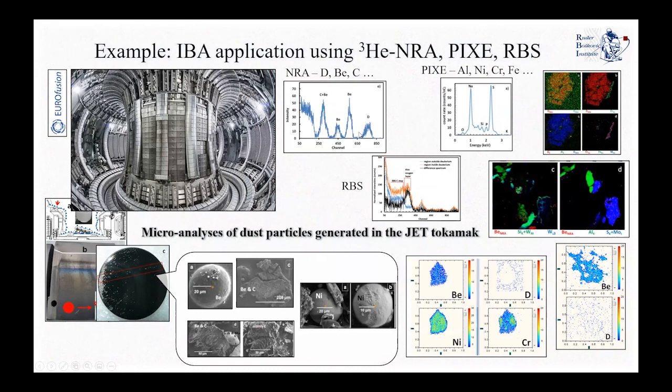These protons are at a high energy part of the spectrum, background-free, which results from the energy the protons gain after the reaction due to the Q-value of the nuclear reactions. With NRA, we can obtain deuterium, beryllium, carbon, boron, and other light elements if present. Combined with PIXE and RBS in parallel, you can obtain information about heavier elements — with PIXE you can measure aluminum, nickel, chromium, iron, and even heavier elements.